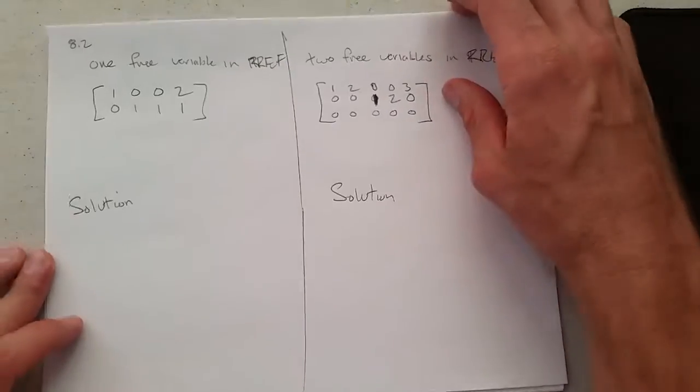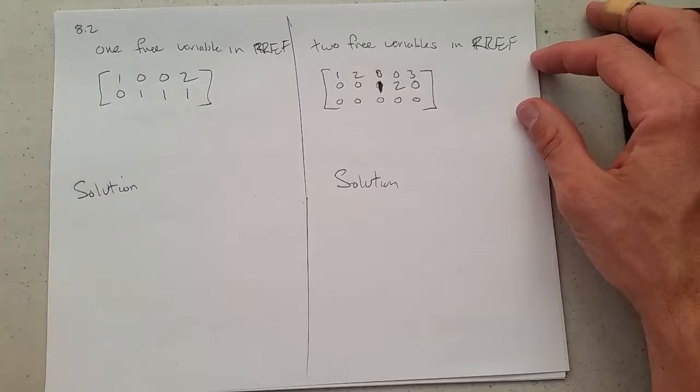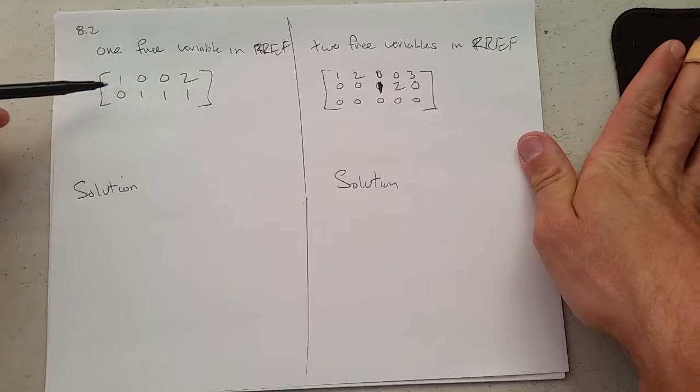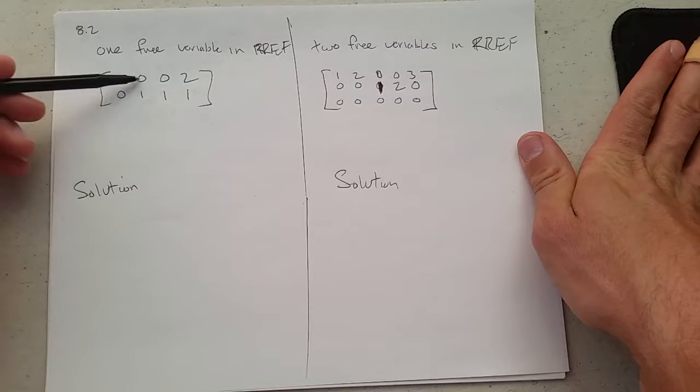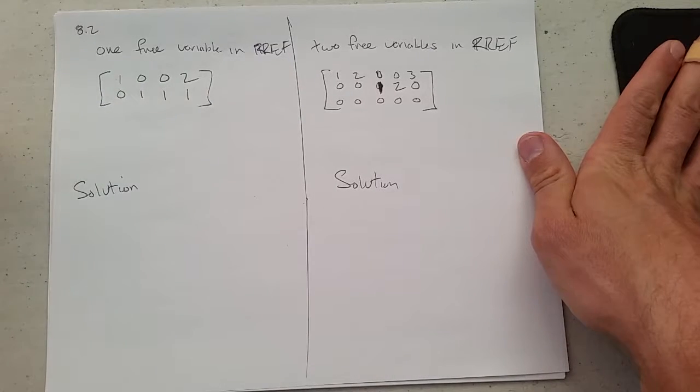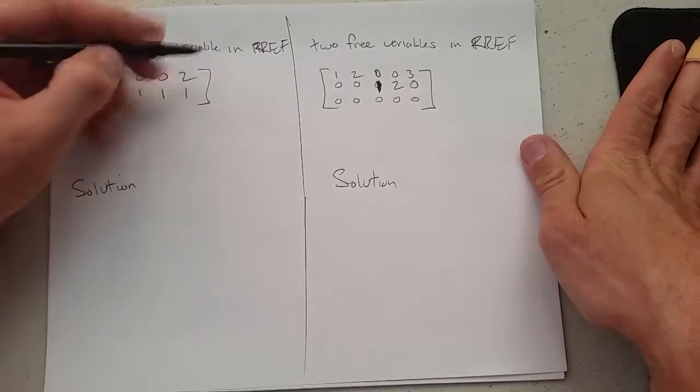So here are some more row-reduced echelon forms. Here's what one free variable looks like. So is this row-reduced echelon form? We've got our leading 1, 0 in that column. We've got a 1 and a 0 up here. This one's not leading, so it doesn't need to have a 0 up here.